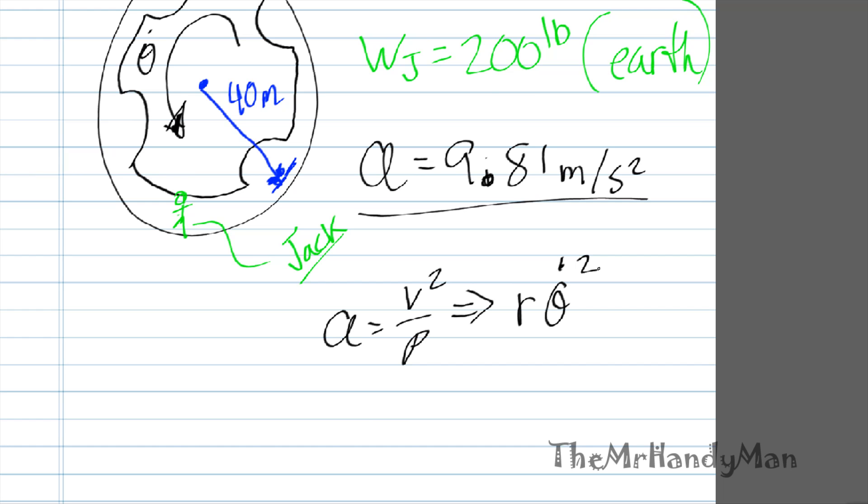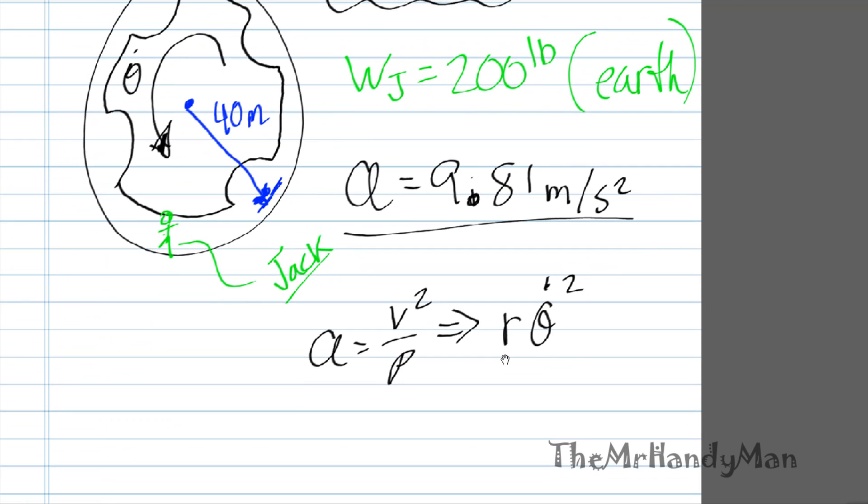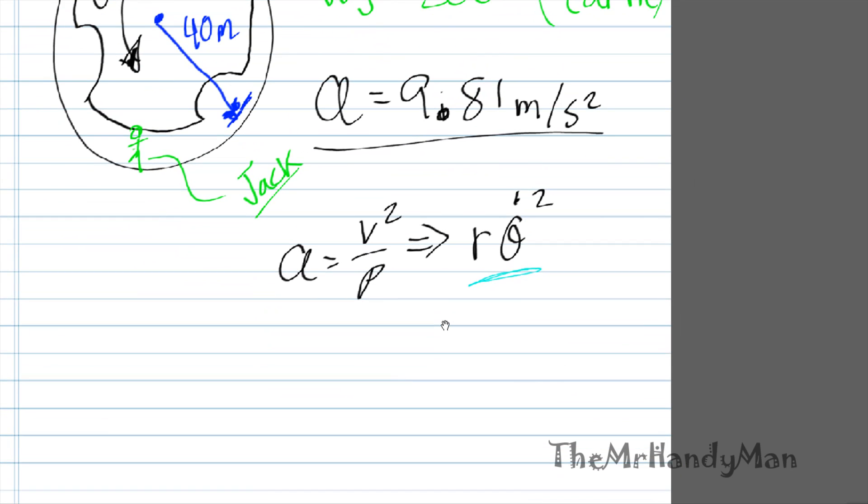Well, given the numbers here, I'm going to use this one on the right because that just seems to make a little bit more sense considering that we have all that information. So let's just plug it in. I'm going to plug it in just below: 40 times theta dot, which we don't know, squared. And they want to simulate Earth's gravity so I'm going to make that equal to 9.81.